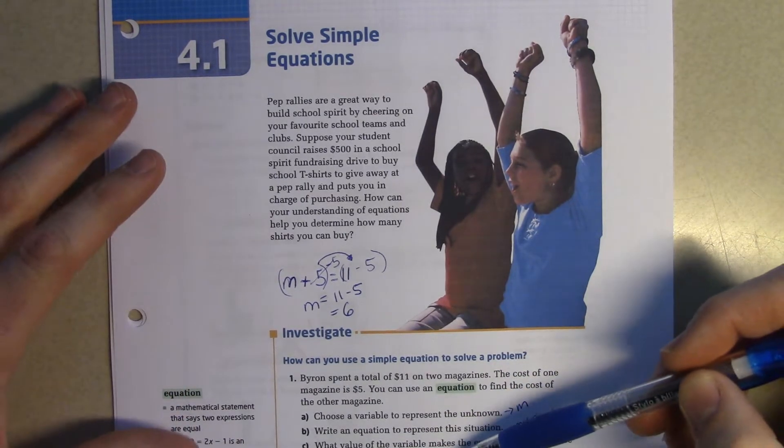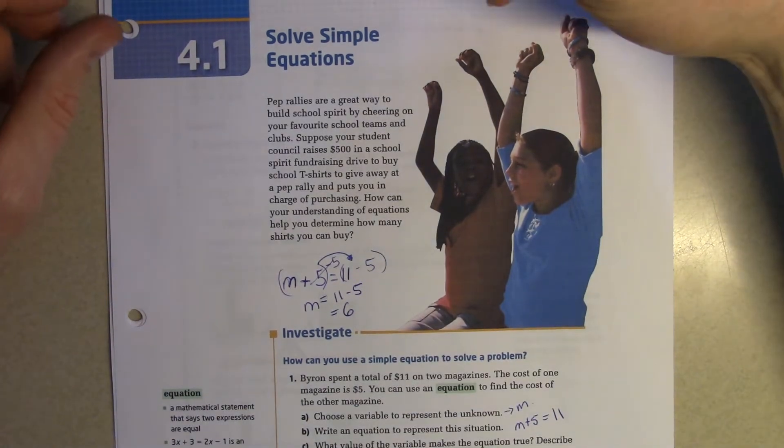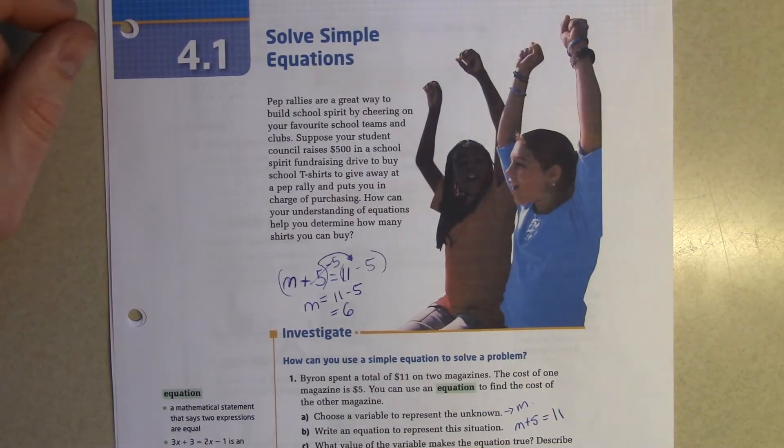Describe the math operations used to find the value. The math operation we used was subtracting 5 from both sides of the equation.